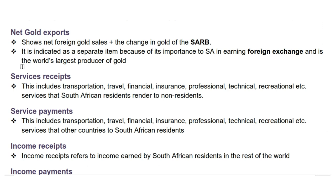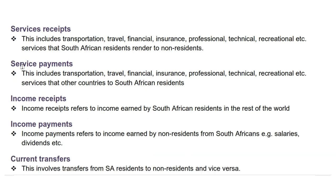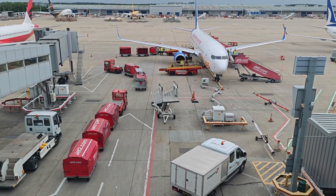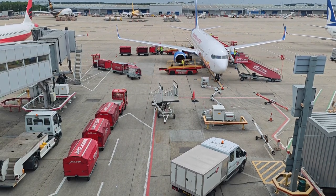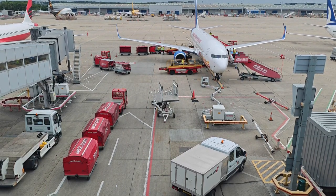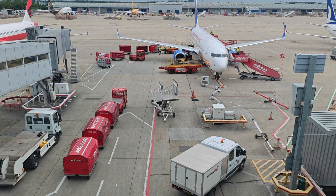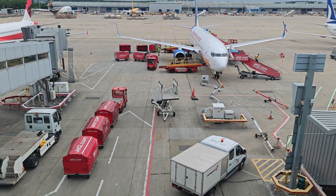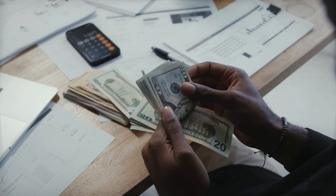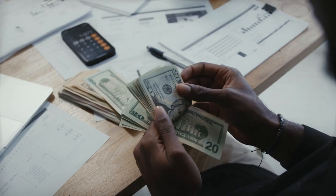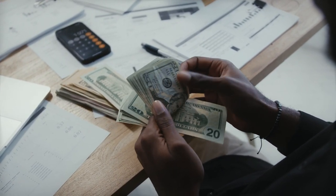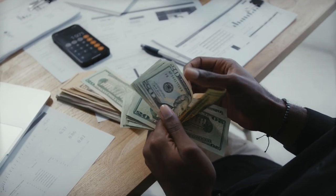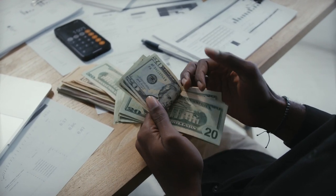Up next is services receipts. This includes transportation, travel, financial, insurance, professional, technical, recreational, and other services that South African residents render to non-residents. For instance, if a South African software company provides IT services to a U.S. client and receives payment for those services, that receipt would be included in South Africa's service receipts.